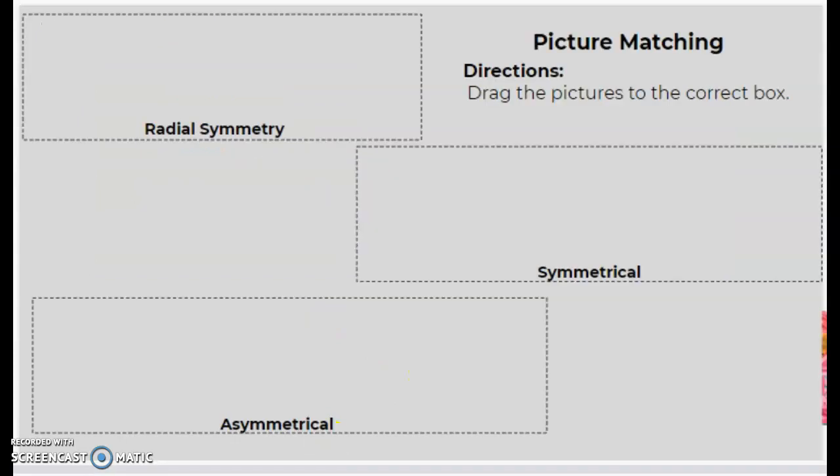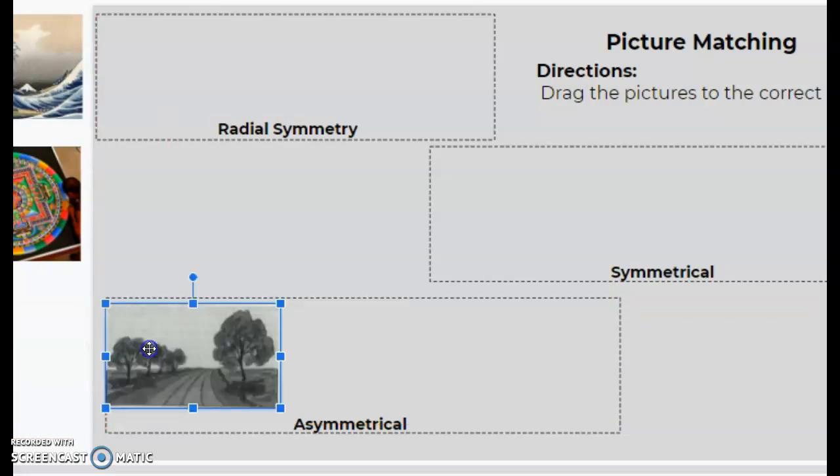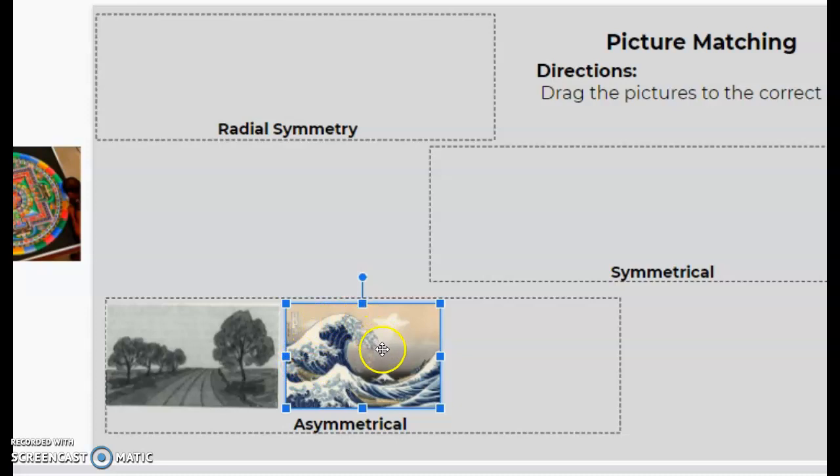Okay, and same with the picture matching. A lot of you did great on this one, there were some tricky ones, but I'll show you what I was thinking were the best answers for this. Let's start with asymmetrical, I think that might be an easy place to start, meaning different on both sides. So we saw this picture already, I'll drag that one over. And then I had two examples of asymmetry in art.